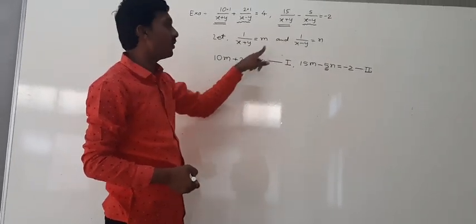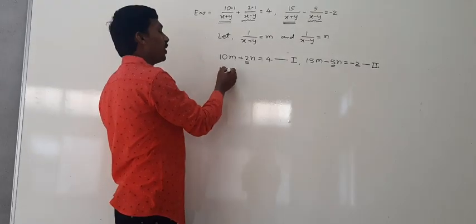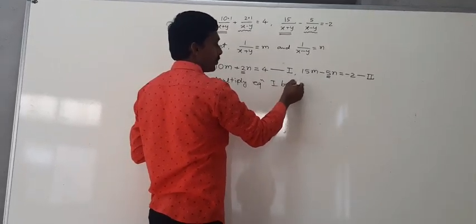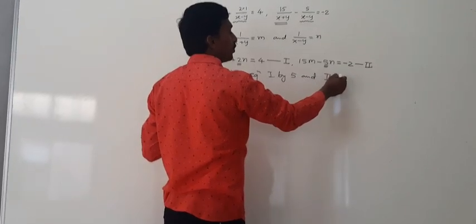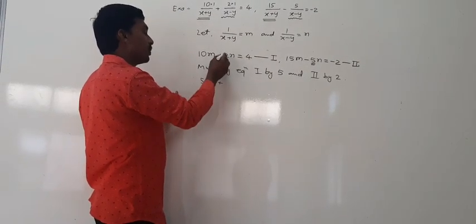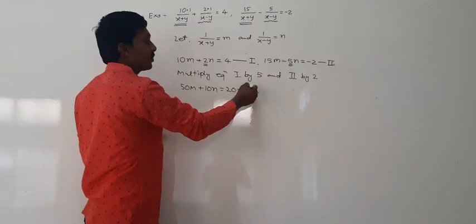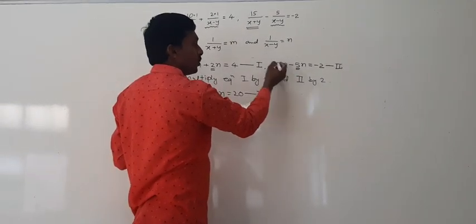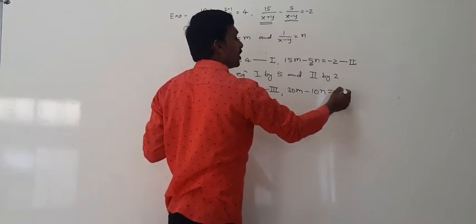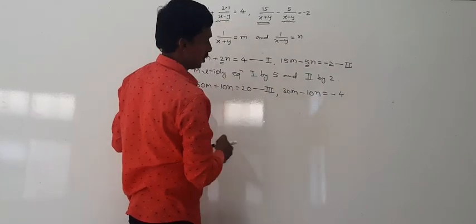After multiplying equation 1 by 5, we get 50m plus 10n is equal to 20 — this is equation 3. Multiplying equation 2 by 2 gives 30m minus 10n is equal to minus 4 — this is equation 4. Now the coefficients of n in equations 3 and 4 are both 10.